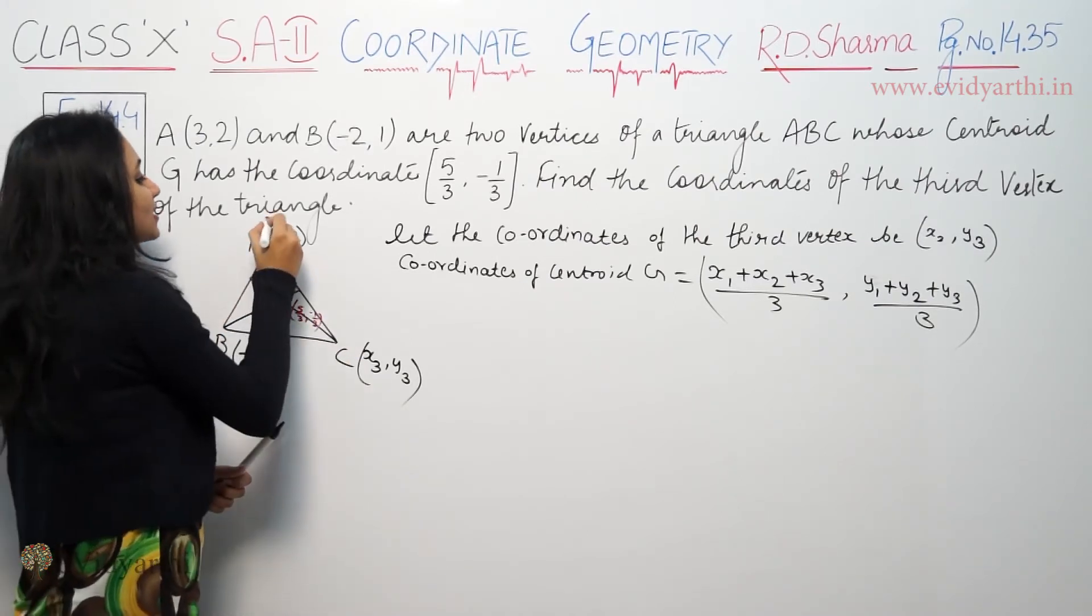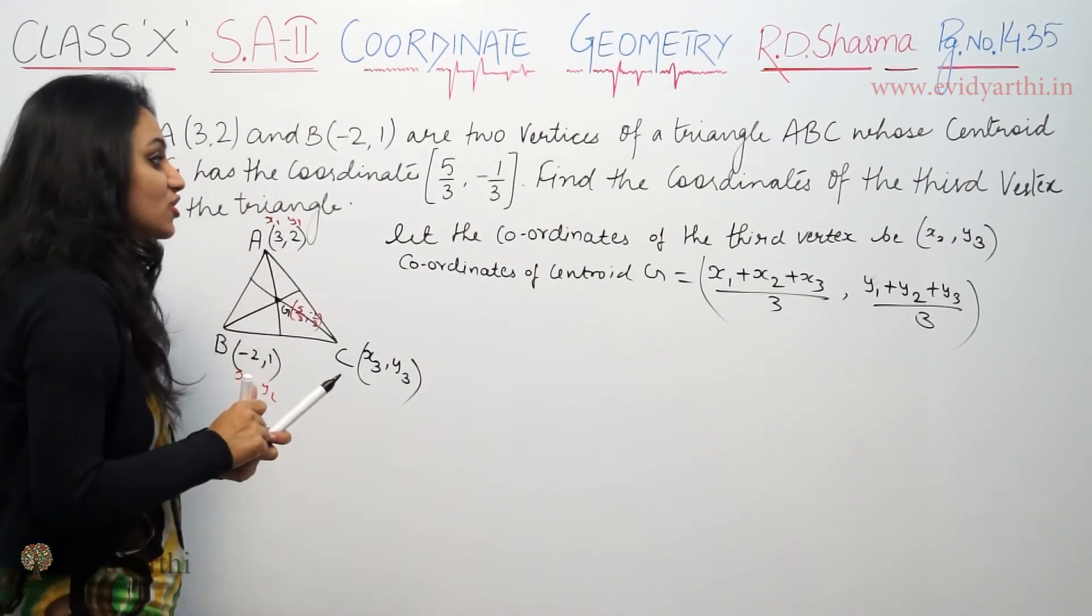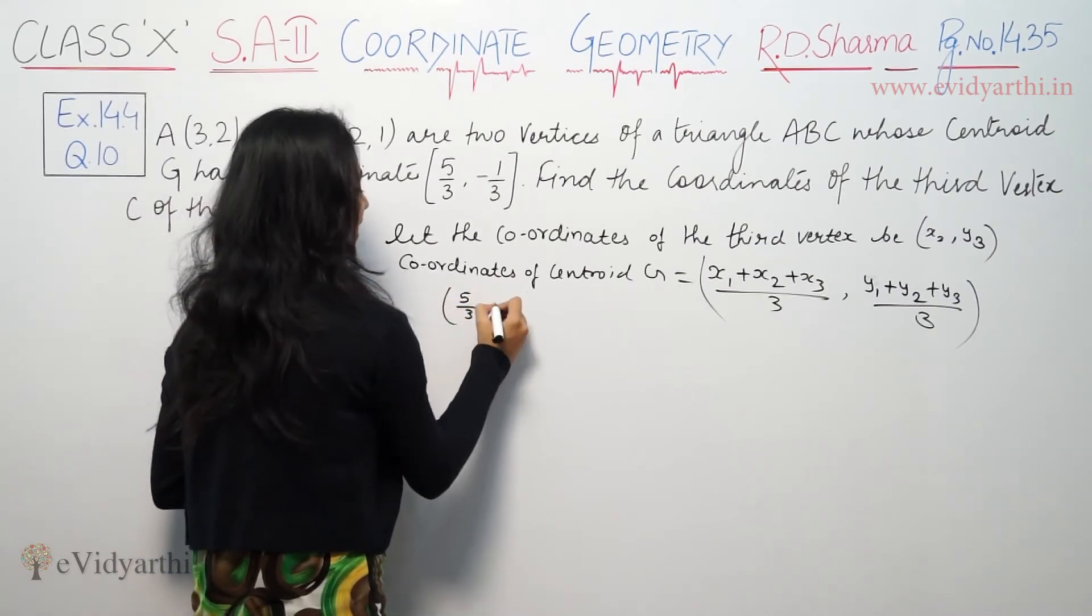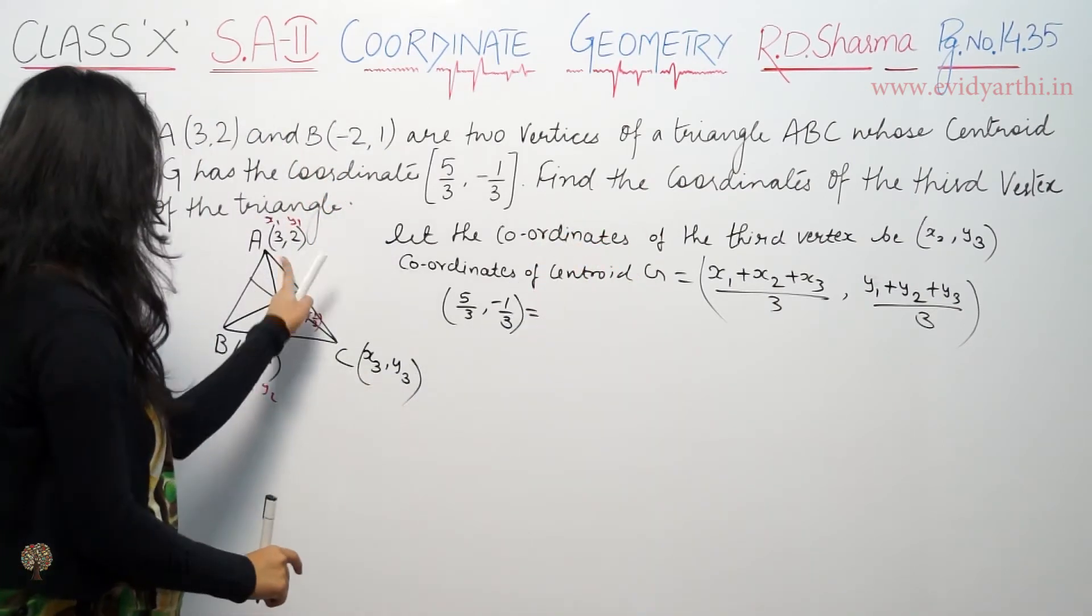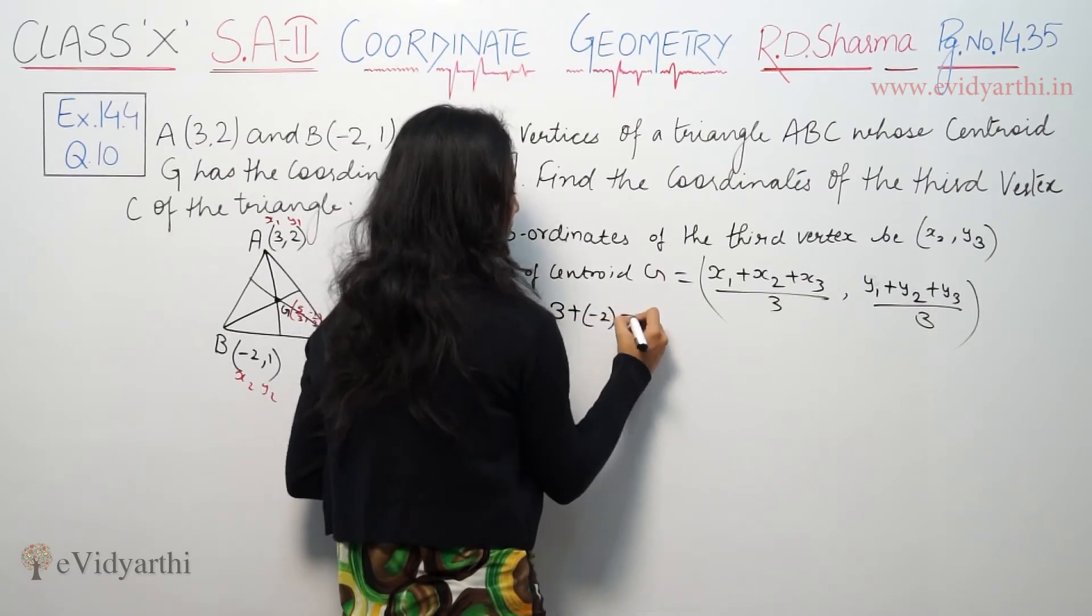Suppose this is X1, Y1. This is X2, Y2. Coordinates of centroid G are 5 by 3 and minus 1 by 3. So (x1 + x2 + x3)/3. x1 is 3, x2 is minus 2, so 3 plus minus 2 plus x3 over 3.